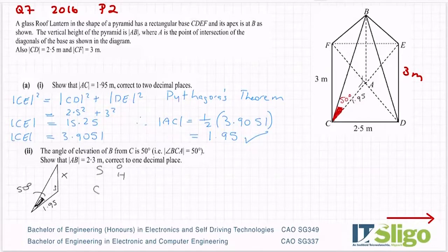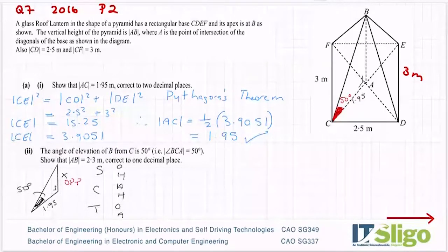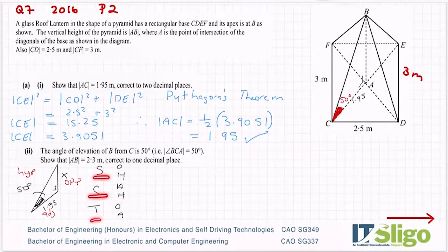So silly old Harry caught a herring trawling off America. Let's label our sides. So your opposite, your hypotenuse, so you must be adjacent. So we have opposite over adjacent, so it lends itself to tan. Sine, cos, tan all give you the same answer. It's just which do you have enough information about. So I know nothing about the hypotenuse, so that's why sine and cos is ruled out. And that's why it must be tan.